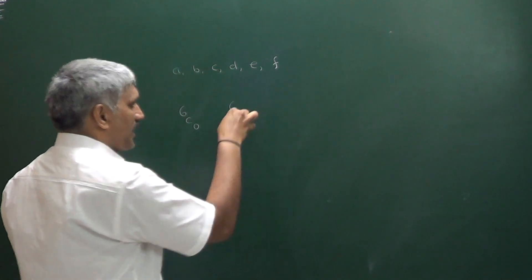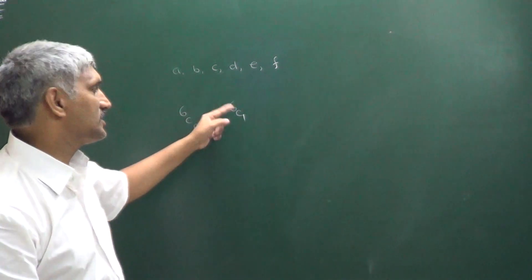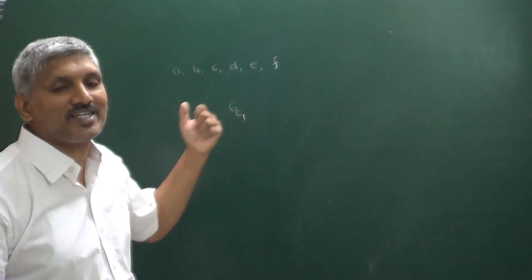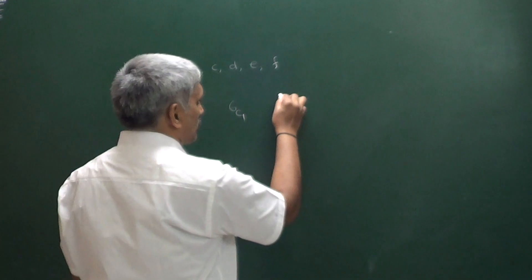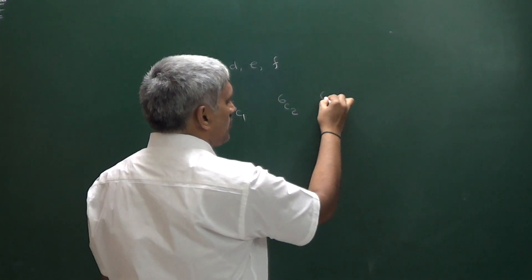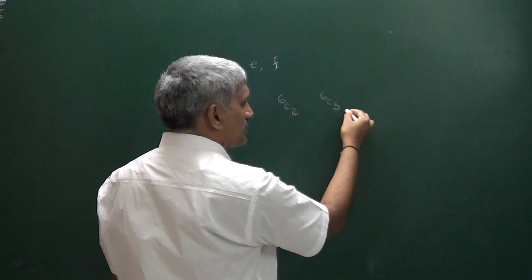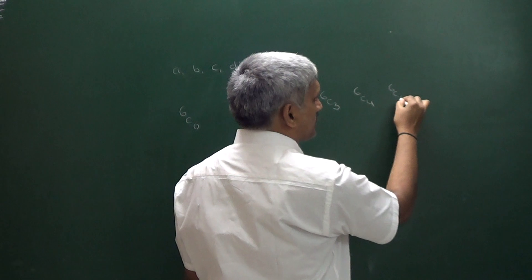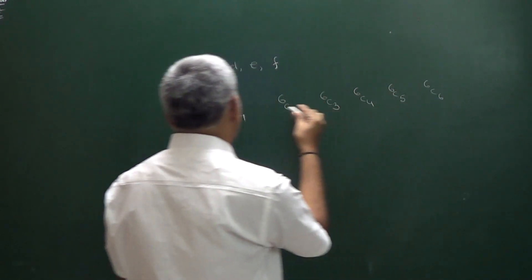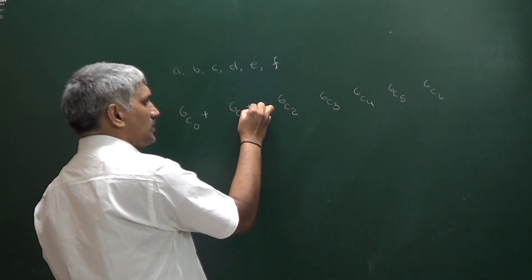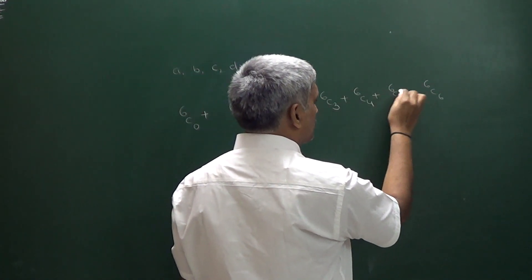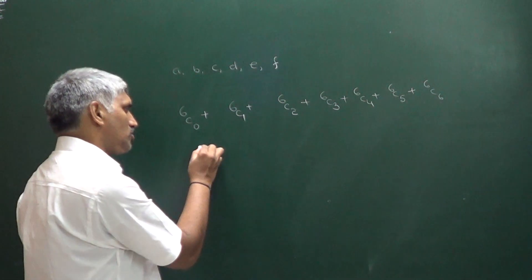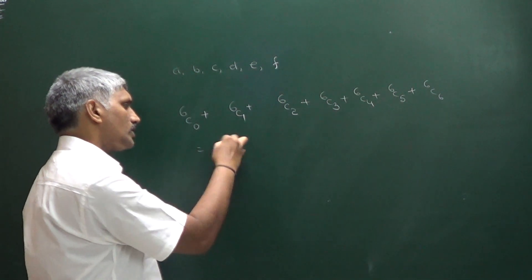From these 6 items, 1 item can be selected in 6C1 ways, because any of the items you can select. From 6 objects, 2 can be selected in 6C2, 3 in 6C3, 4 in 6C4, 5 in 6C5, and 6 in 6C6. So the total is 6C0 + 6C1 + 6C2 + 6C3 + 6C4 + 6C5 + 6C6. The sum of binomial coefficients is 2 to the power of 6.